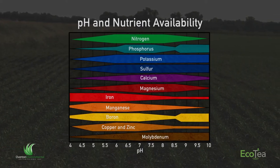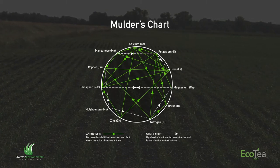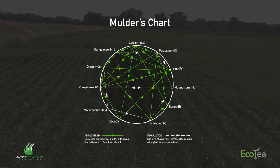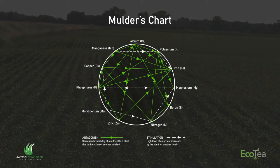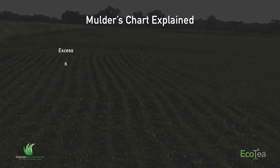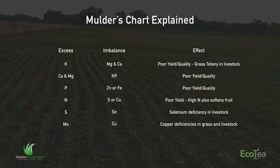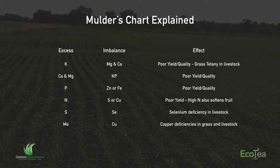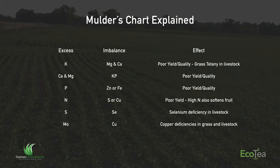The other thing people look at is something called Mulder's chart, which describes how the availability and presence of certain minerals will impact other minerals. For example, if you've got excess potassium in your soil, you'll see an imbalance in magnesium and calcium. However, this again doesn't tell you anything about what biology is doing — it strictly talks about what's happening chemically in the soil.